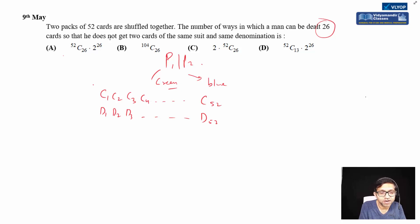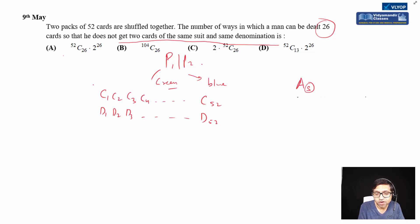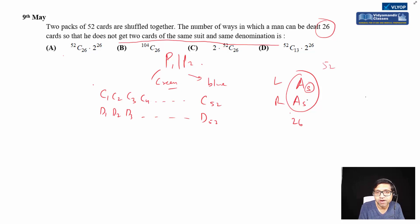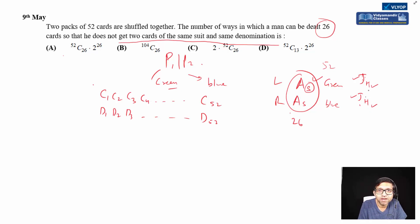We need to select 26 cards such that we do not get two cards of the same suit and same denomination from both packs — for example, ace of spades from pack one and ace of spades from pack two should not both be selected. That is the condition — same denomination, same suit from both packs must not appear together.